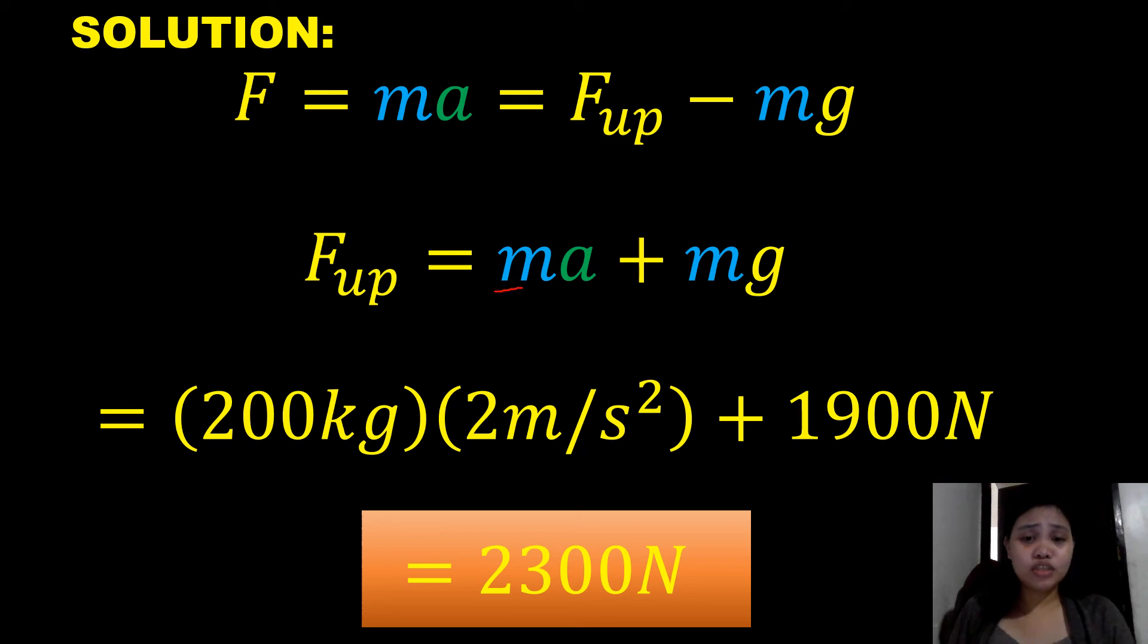Mass is 200 kilograms and the acceleration is 2 meters per second squared, plus the mg which is the one that we solved a while ago, which equals 1,900 newtons. 200 times 2 plus 1,900 newtons equals 2,300 newtons.